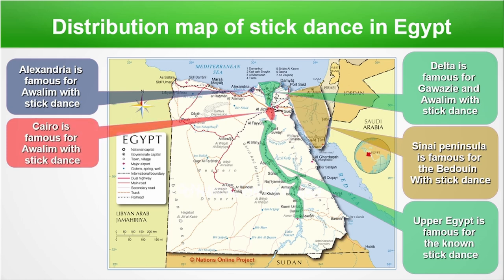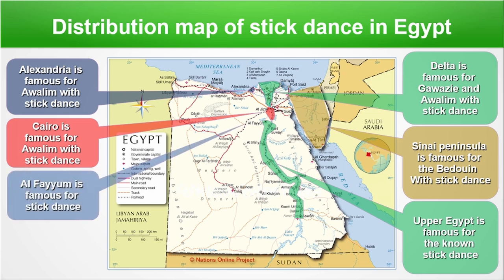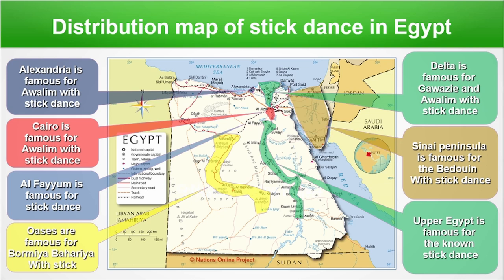Cairo is famous for Awalem with the stick dance and also oriental dancers using a special type of stick. El Fayoum is a smaller city that also uses the stick through their dance. In the oasis region — particularly Bahariya — they use a special type of stick in their performances too.